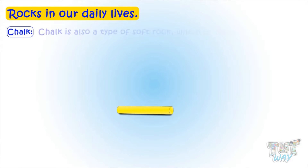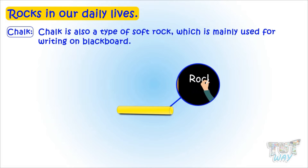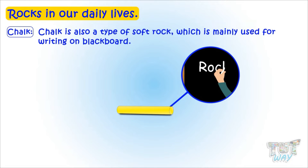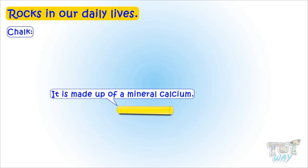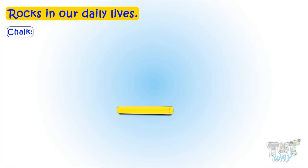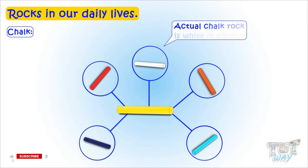Chalk is also a type of soft rock which is mainly used for writing on blackboards. It is made of a mineral named calcium. Chalk can be given any color, and we get different colors of chalk in the market. But actual chalk rock is white in color.